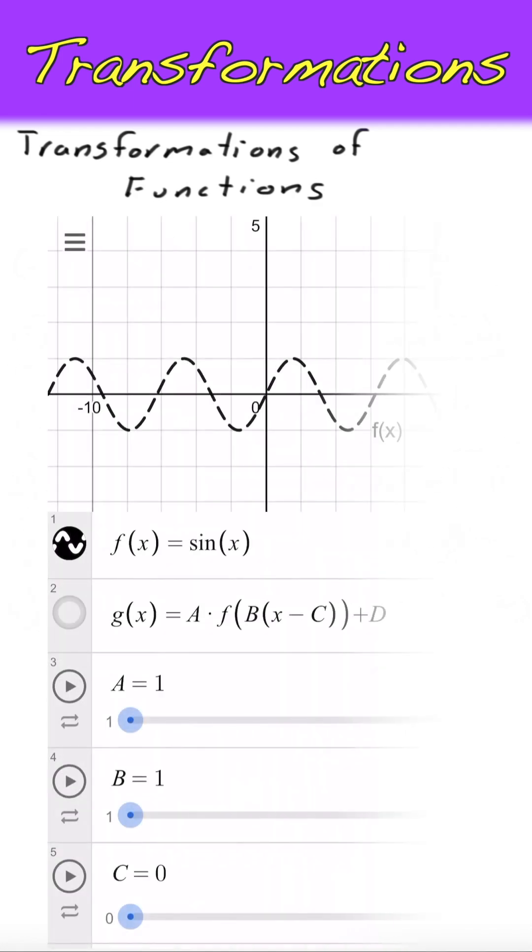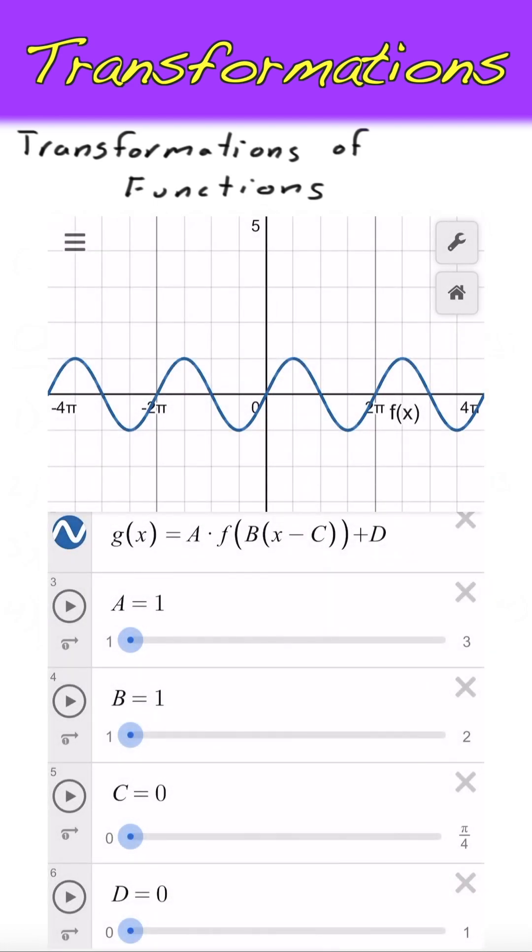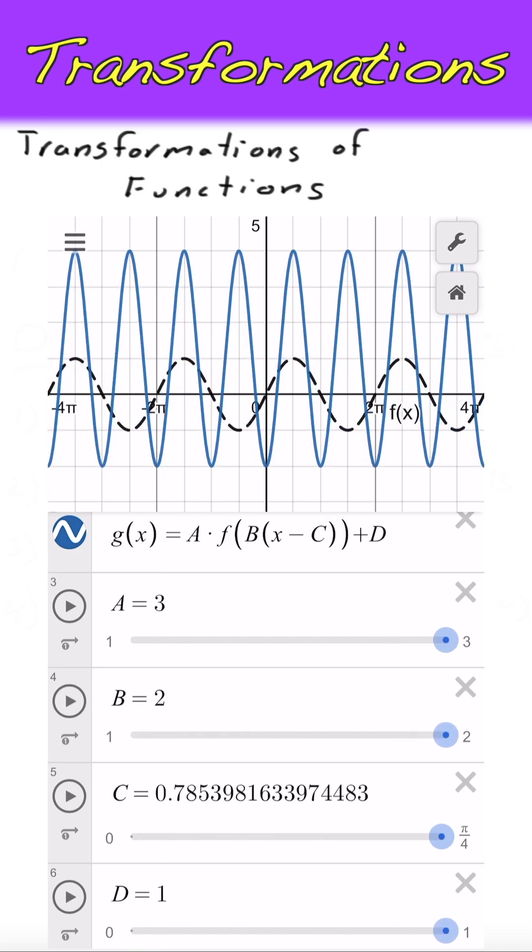If we consider the parent function sine of x, then g of x equal to 3 sine of 2 times x minus pi over 4 plus 1 would be shifted right, compressed horizontally, stretched vertically, then shifted up, each by the amount of their corresponding parameter.